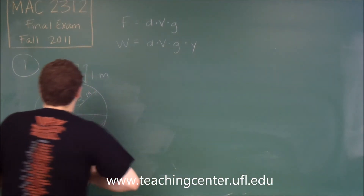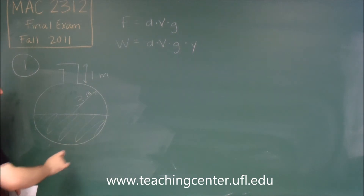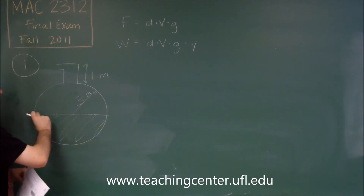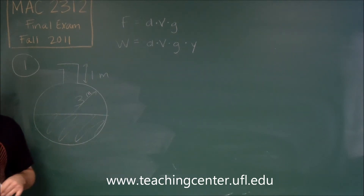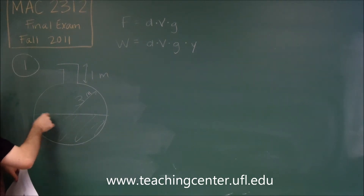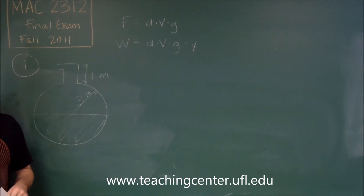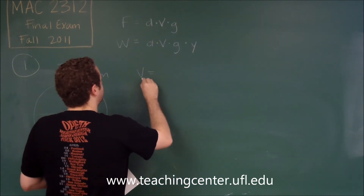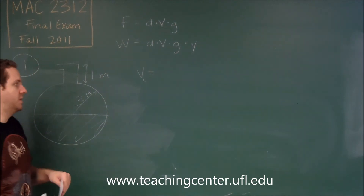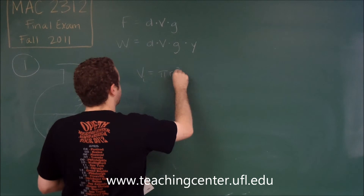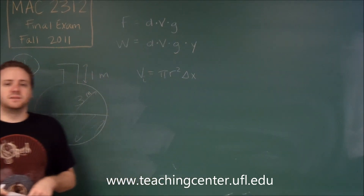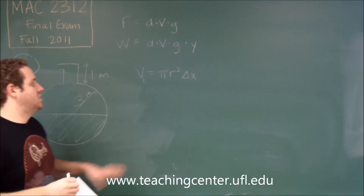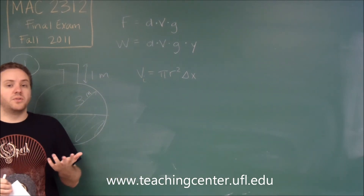Since we're integrating over X, which represents depth, our volume term only needs to capture the area of each thin slice of liquid — then we add up all the slices as we go through X. Looking at a slice of this liquid, it's a circle, so the volume of the i-th slice is π r² ΔX, where ΔX becomes DX in the integral. We're essentially integrating the area to get the volume.